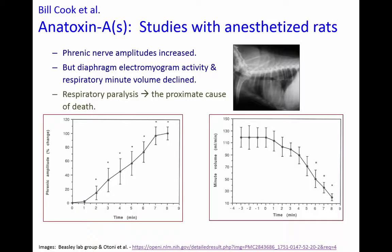Research from Dr. Bill Cook's PhD studies showed that in anesthetized rats dosed with anatoxin-A(S), phrenic nerve amplitudes increased while diaphragmatic EMG — electromyogram activity, i.e., muscle activity — decreased at the same time. This confirmed that respiratory paralysis is the cause of death from anatoxin-A(S).